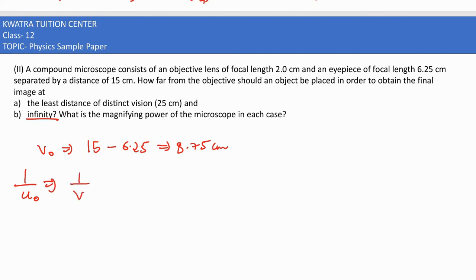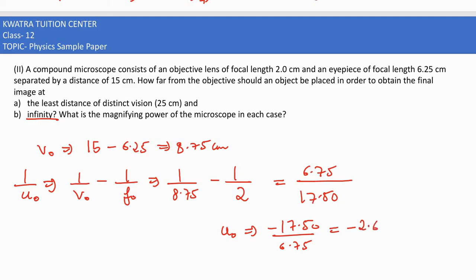1/u₀ = 1/v₀ - 1/f₀. 1 by v₀ is 8.75 minus f₀ which is 2, giving 6.75 divided by 17.50. Taking the reciprocal, u₀ = -17.5 / 6.75 = -2.6 cm.